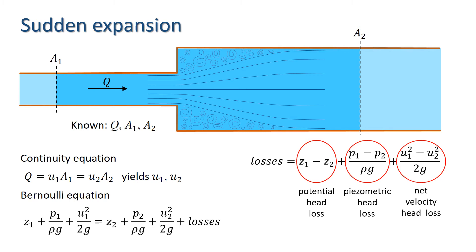Since the flow is horizontal, we know that the potential head loss is zero, i.e. that z1 equals z2. Thus, the equation simplifies to the sum of the piezometric head loss and the velocity head loss only.